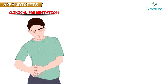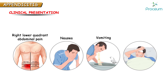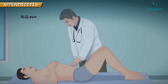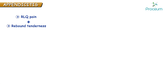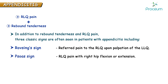A patient coming with right lower quadrant pain along with rebound tenderness is classic for appendicitis. Rebound tenderness means you apply pressure at McBurney's point and on removal of that pressure the patient screams in severe pain. In addition, three classical signs are often seen: Rovsing's sign, psoas sign, and obturator sign.